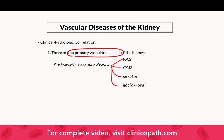Similarly, if you are looking at someone with hyaline arteriolosclerosis, which is going to give us glomerulosclerosis, you should also go looking in other organs, because in the brain you're going to see hemorrhagic stroke. So there's no primary vascular disease of the kidney — every time you find vascular disease in the kidney, you know it's a marker of systemic vascular disease.